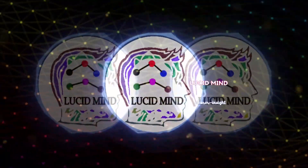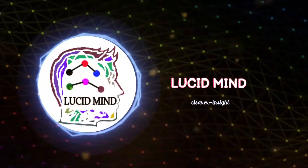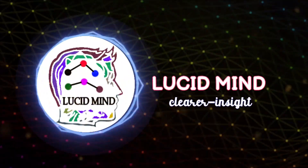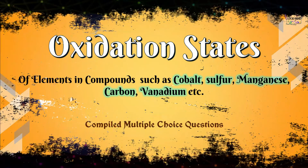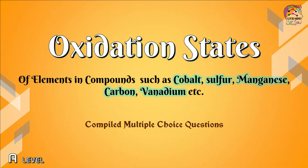Welcome to Lucid Mind Chemistry channel. In this video I have compiled questions related to finding oxidation numbers for different elements in their compounds such as cobalt, sulfur, manganese, carbon, and vanadium.